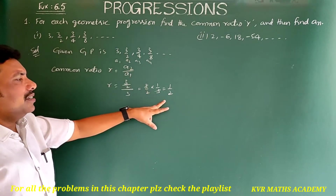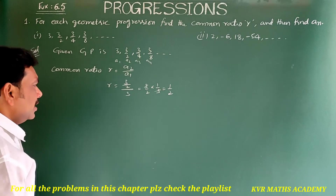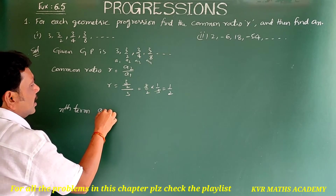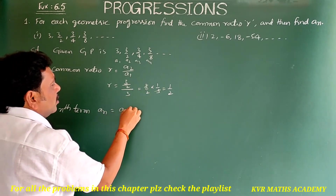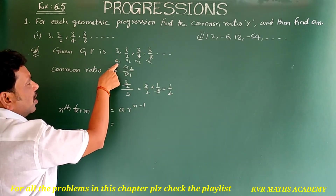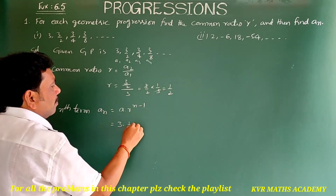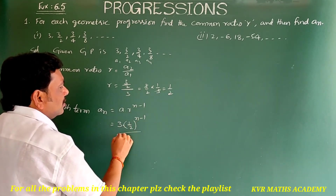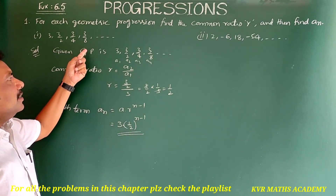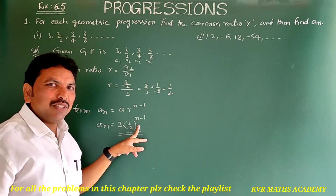So the common ratio of the given geometric progression is 1/2. Now we also have to find an. The nth term formula is: an = a × r^(n−1). Here a (or a1) is 3, and r is 1/2, so an = 3 × (1/2)^(n−1). This is the nth term of the given GP.